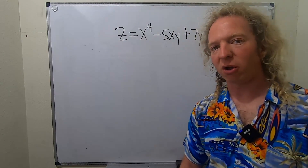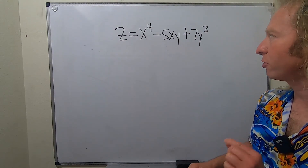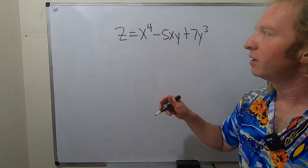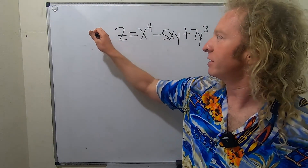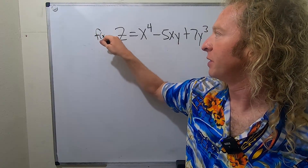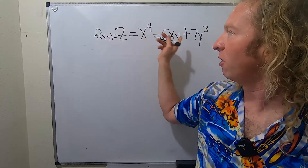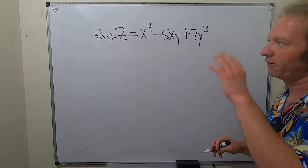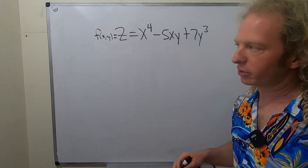In this video, we're going to find all second-order partial derivatives of this function. You can think of this as f of x, y if you like. You have to find all second-order partial derivatives, so let's start by finding the first-order ones.